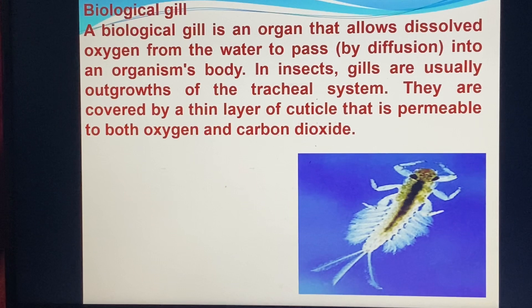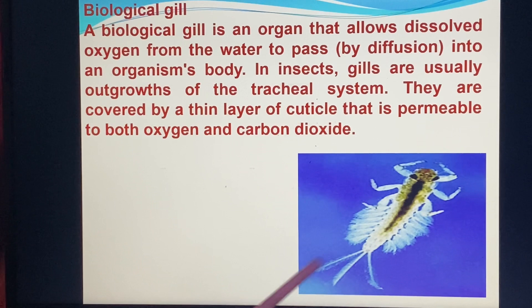A biological gill is an organ that allows dissolved oxygen from the water to pass by diffusion into an organism's body. In insects, gills are usually outgrowths of the tracheal system. They are covered by a thin layer of cuticle that is permeable to both oxygen and carbon dioxide.